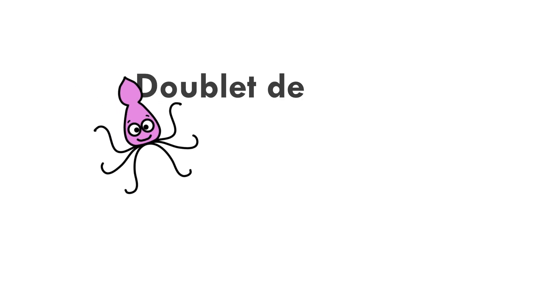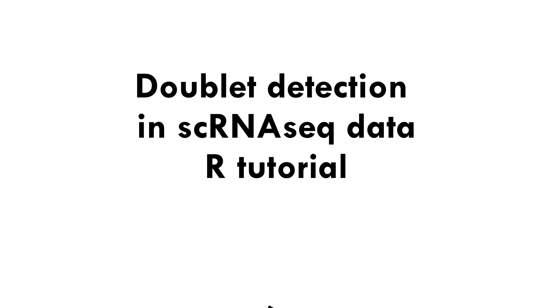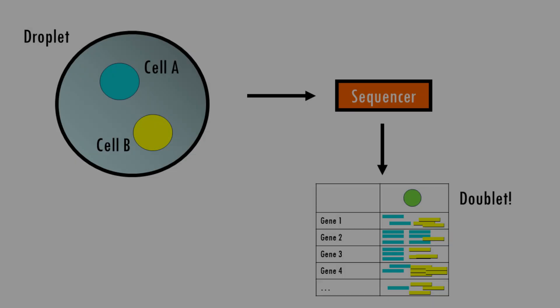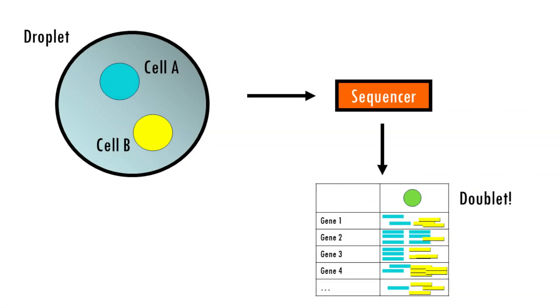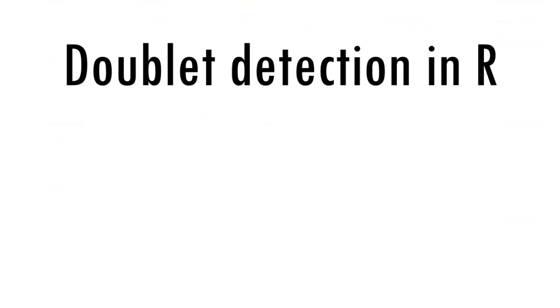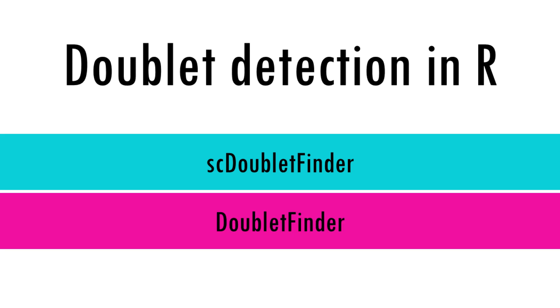Hi and welcome to Biostat Squid. In this tutorial we will learn how to do some general doublet QC and we will learn how to remove doublets from our Seurat object in R for single-cell RNA-seq data. This tutorial assumes you have already run one or more tools for doublet detection, so you have your singlet and doublet annotations in the metadata. If you haven't yet, check out my previous videos on doublet detection using SCDoubletFinder and DoubletFinder to identify doublets.